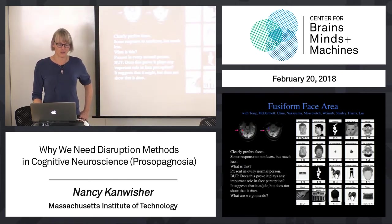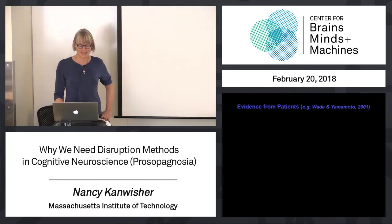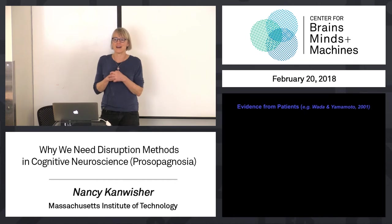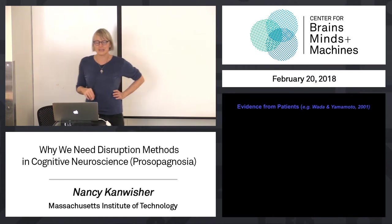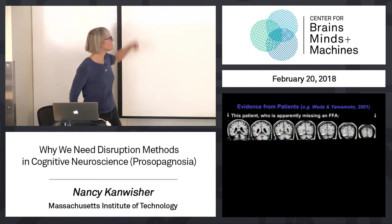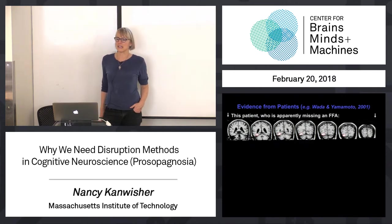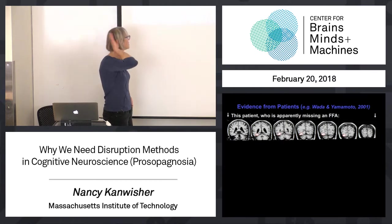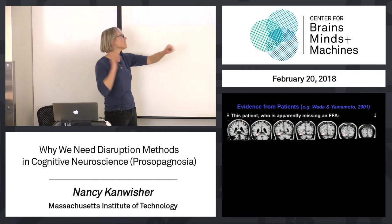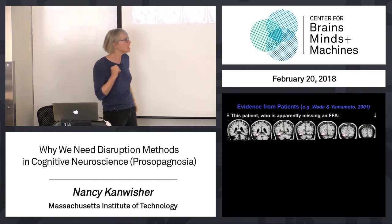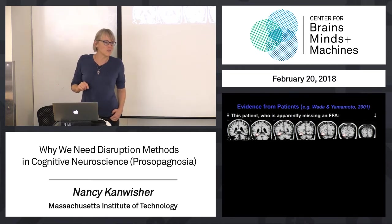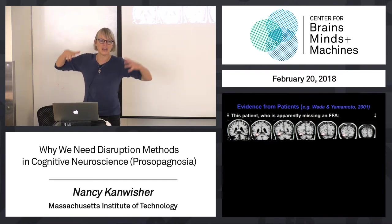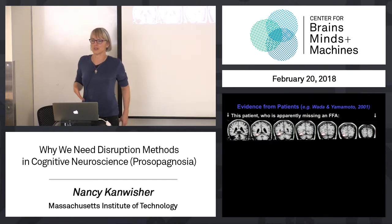This is why we're now moving on to consider other methods. One of the major methods in the field is learning from patients who have brain damage. This gentleman in Japan — these are slices through his brain near the back of his head, with the cerebellum on the bottom. The little white thing outlined in red is a lesion in his brain. This is an unusually small lesion, which is very useful, since brain damage is usually big and diffuse and then people have lots of problems and it's hard to reason from that.